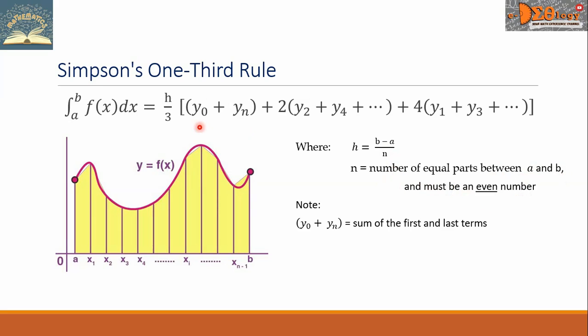Now for the formula, this y sub 0 plus y sub n is the sum of the first and last terms. Then plus the constant 2 multiplied by the addends, y sub 2 plus y sub 4 and so on, which is the sum of even indexed terms. Then plus the constant 4 multiplied by y sub 1 plus y sub 3 and so on, which means this is the sum of odd indexed terms.